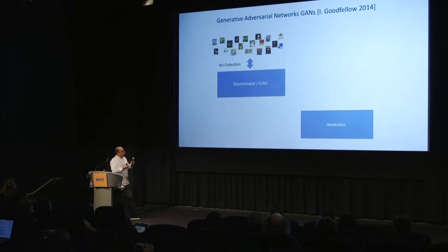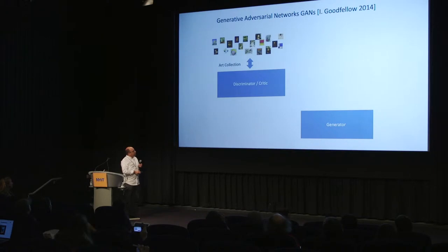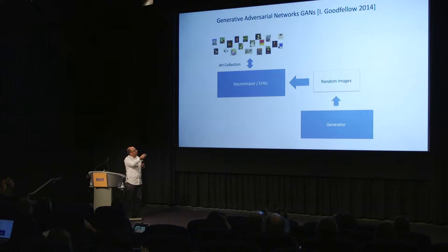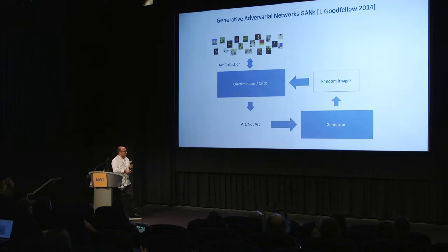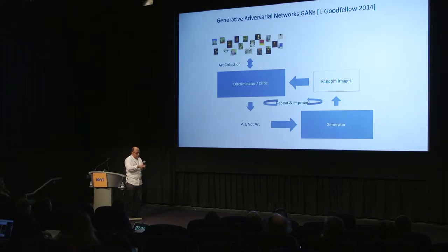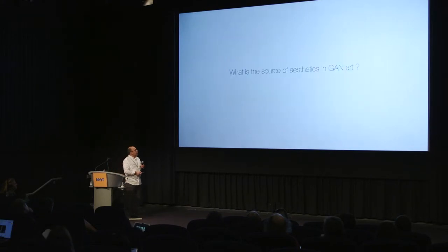GANs work by a game between two players: one is called the generator and one is called the critic or discriminator. The generator knows nothing — it just generates random images. The critic has access to the data, whether that's cats, artworks, or whatever images you provide. The generator starts with a random image, the critic says it's not real, and that signal goes back to the generator to improve and improve. At the same time, the critic improves its ability to tell what's real and what's not, until there is hopefully an equilibrium and the generator can produce something sensible.